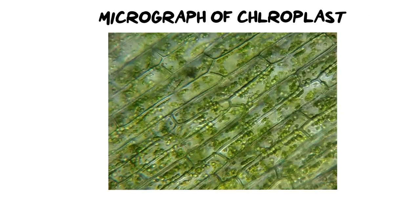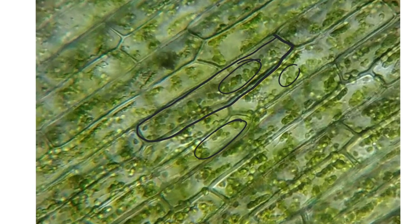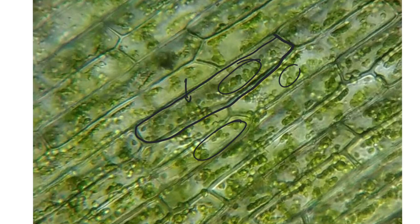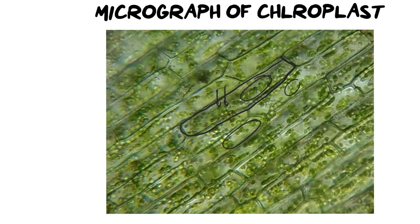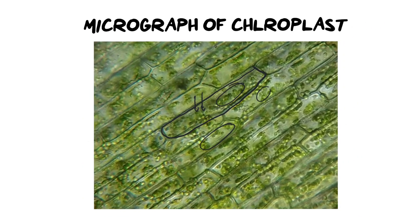I also wanted to include a micrograph of what chloroplasts look like inside cells. Here is a plant cell with its cell wall, and as you can see, we have thousands of chloroplasts. Even if we zoom in a bit closer, you can see each individual chloroplast, and inside each one would be all the structures we've just identified.